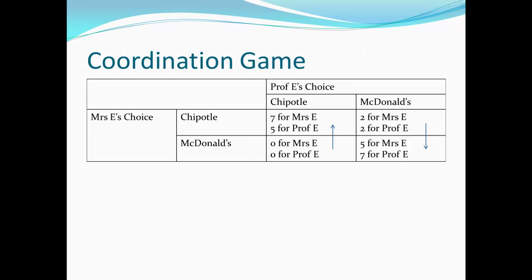An important point: there is no dominant strategy here. Sometimes going to Chipotle is the right choice, sometimes McDonald's is the right choice for my wife. In my case, the result is very similar. If I think my wife is going to Chipotle, I also want to go to Chipotle — five points from eating with her beats two points from eating McDonald's alone. If I believe my wife is going to McDonald's, I certainly want to go to McDonald's for seven total points rather than zero from eating Chipotle by myself. So once again, no dominant strategy.